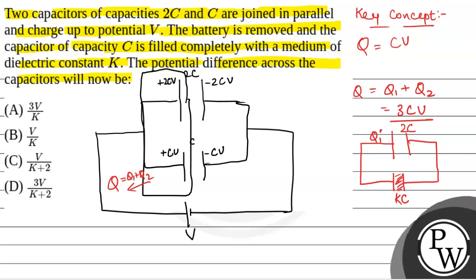The new charge will be Q1 dash on capacitor 2C and Q2 dash on capacitor KC. Let Vc be the common potential. Vc is the common potential difference between the two capacitors.